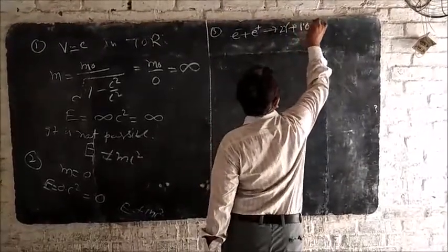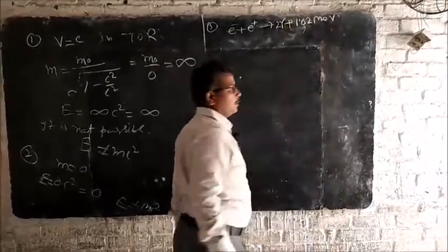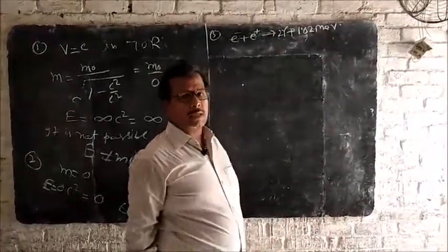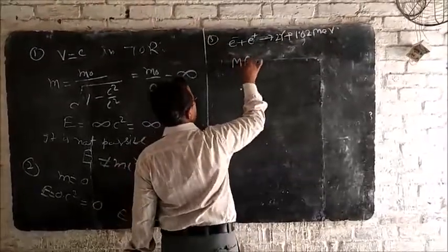And 1.02 mega electron volt energy also produced. This energy produced by the loss of mass. Then according to mass-energy relation,